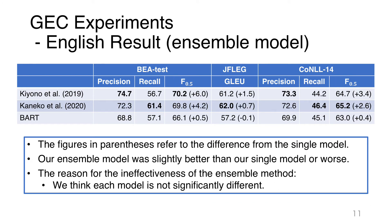For English GEC results using an ensemble model, the figures in parentheses refer to the difference from the single model. Our ensemble model was slightly better than our single model, or was comparable. We believe the reason for the limited effectiveness of the ensemble method is that each model is not significantly different, because the initial weights are the same as those of the BART model, and they only differ in minor aspects such as training data order.